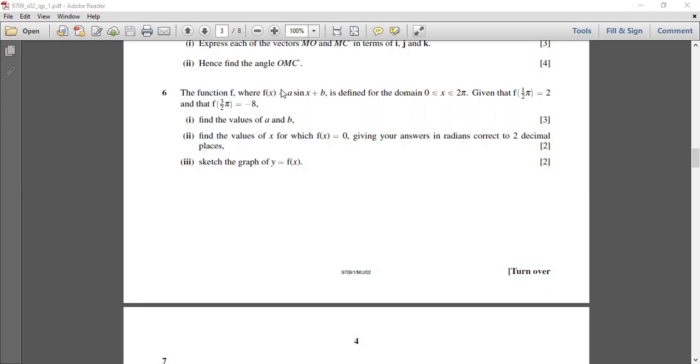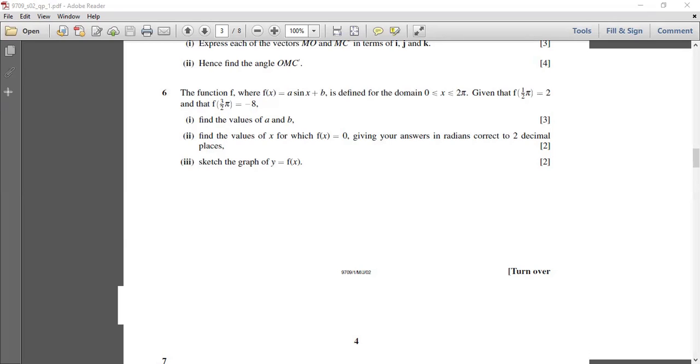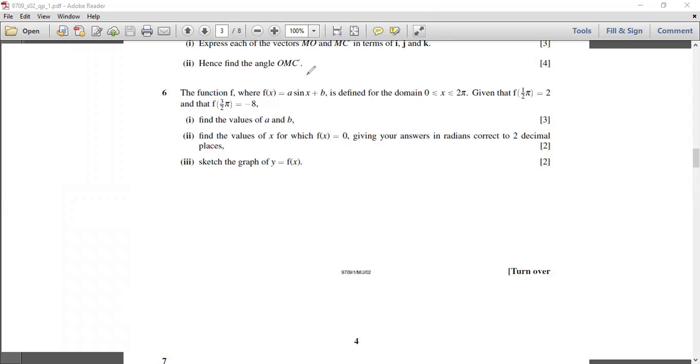All right, let's try question 6 from this paper and let's read it a bit before I begin. So the function f where f(x) equals a sin(x) + b is defined for the domain 0 to 2π. So whenever you see this pi symbol, it's understood that is the standard unit which is in radians.